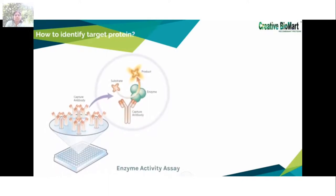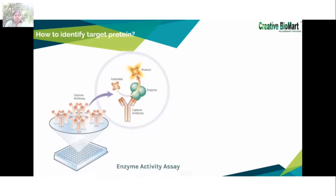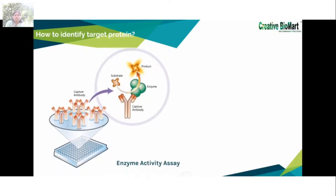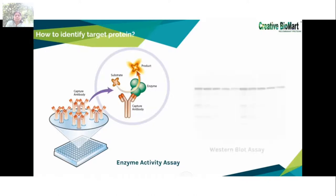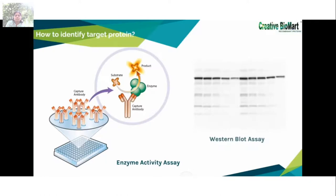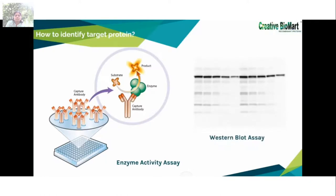Determining an effective assay is often difficult. For enzymes, which are protein catalysts, the assay is usually based on the reaction the enzyme catalyzes in the cell. For already-known proteins, there is a more convenient method: Western blot, where we can use a specific antibody to analyze the target protein. These methods will be used after the purification process.